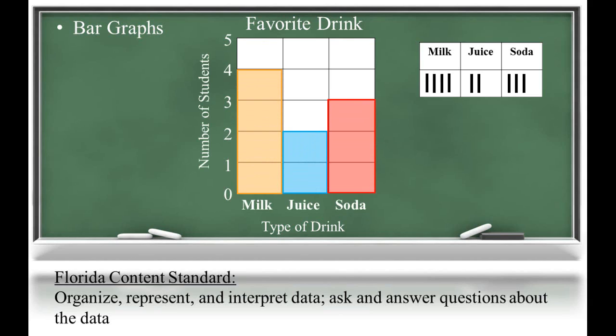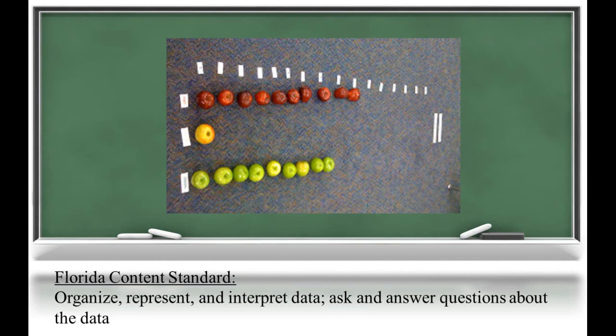Finally, we can shade in each bar to correctly represent the data we collected. Then, students can ask or answer questions by looking at the data. In this example, students are able to relate real-world objects to graphing. This graph can now be recorded on paper. It's important for students to be exposed to graphs that are presented horizontally as well as vertically.